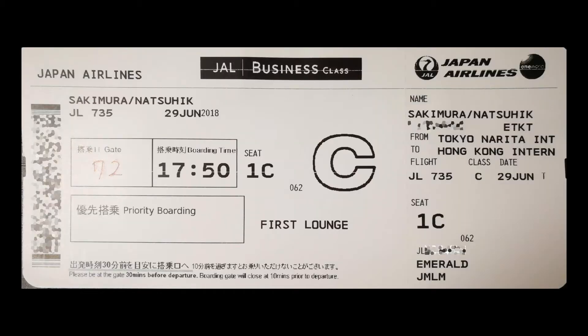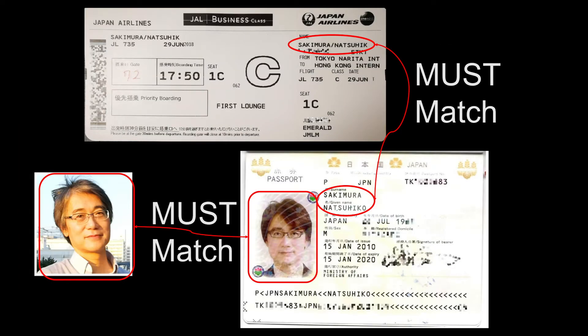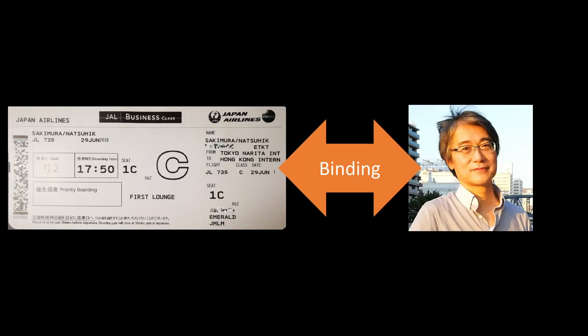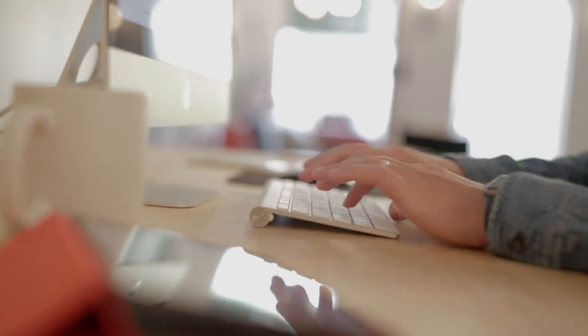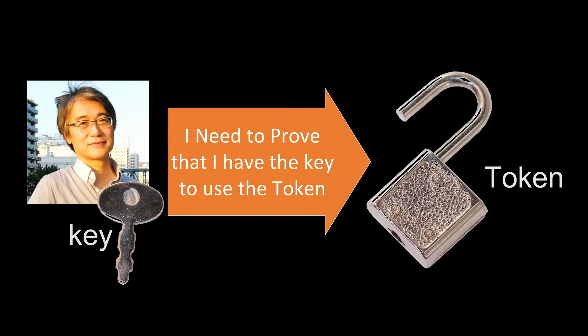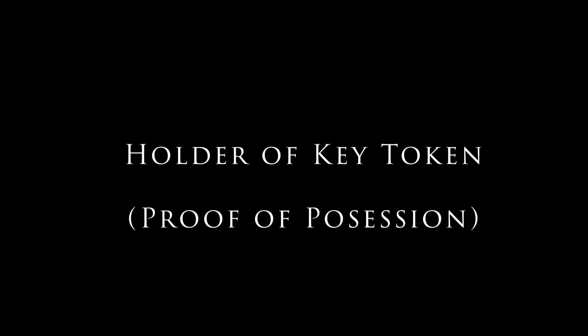There's another type of token in OAuth. It's called sender constraint token. It's like an airline boarding pass — only the person who is entitled to use it can use it. In the case of the airline boarding pass, the name on the boarding pass and the name on your passport must match, and the picture on your passport and your face must match. So the token is bound to you. In an online scenario such as in the case of OAuth, this is usually done through a cryptographic key material. Unless you hold a key to prove that you are the entitled person, the token cannot be used. Because of this, such a token is often called a holder of key token.